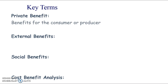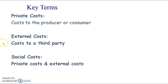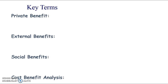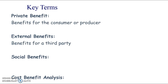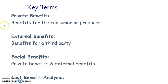We've got private benefits, which are benefits to the consumer or producer. External benefits are benefits for third parties. Whenever you have external costs, that means there's a negative externality, either in production or consumption. Whenever you have external benefits, that means there's a positive externality in production or consumption. So external benefits are benefits that accrue or occur to a third party. And social benefits are just adding up those private benefits and those external benefits, giving us a fuller, truer picture of the benefits that occur because of this action.